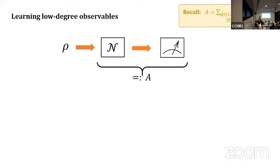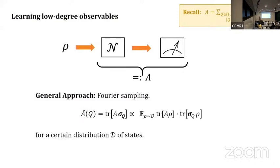Recall our notation. The general approach is something called Fourier sampling, developed from classical literature. The idea is that if we can learn each of these coefficients to high enough accuracy, we've learned the operator. You can rewrite this coefficient where rho is chosen from a particular distribution of states. We can estimate this quantity experimentally.